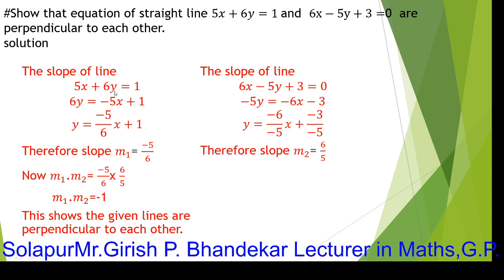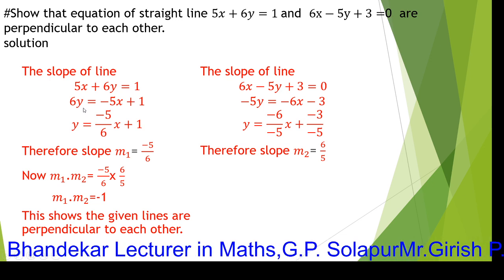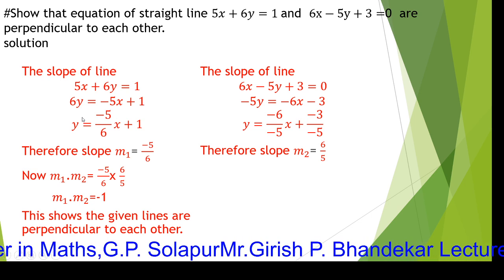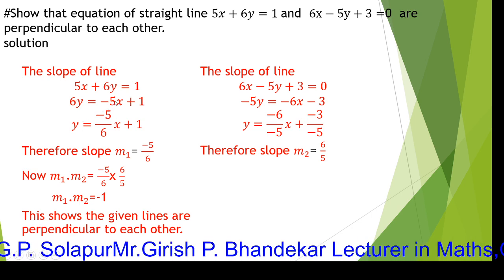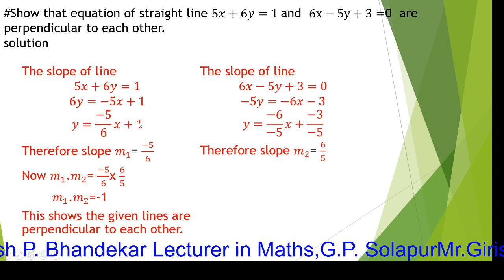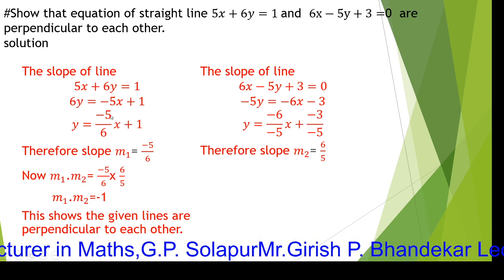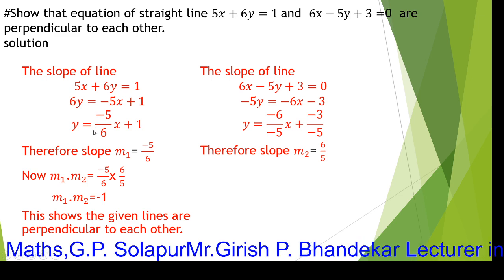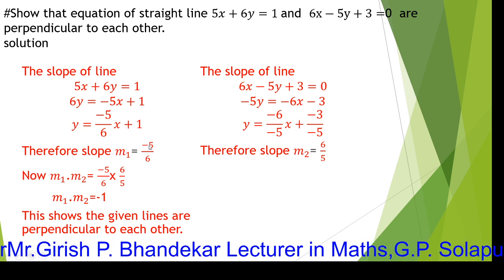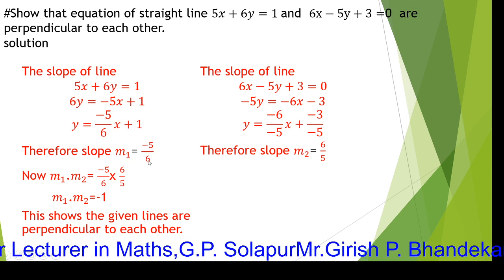For the first line 5x plus 6y equals 1, keeping 6y as it is and rearranging, we divide throughout by 6. The coefficient of y is 6, so 6 cancels and we get y equals minus 5 upon 6 times x plus 1 upon 6. The coefficient of x is minus 5 upon 6, so the slope of the first line M1 equals minus 5 upon 6.